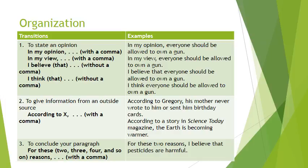The next transition is used to give information from an outside source. When you use the phrase 'according to,' you are saying someone else said whatever information you're going to give. You say 'according to' and then the person's name, or the magazine's or newspaper's name, followed by a comma and the fact. For example: 'According to Gregory, his mother never wrote to him or sent him birthday cards.' Or: 'According to a story in Science Today magazine, the earth is becoming warmer.' This is used to introduce facts said by someone else or another source.